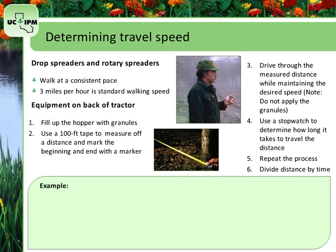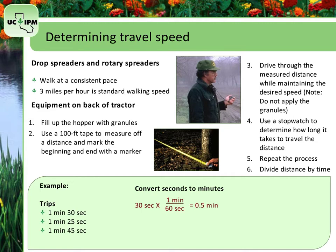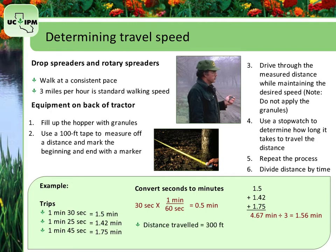Here is an example. Say your trips were 1 minute 30 seconds, 1 minute 25 seconds, and 1 minute 45 seconds. First you would have to convert these all to minutes. So for your first trip, 30 seconds multiplied by 1 minute per 60 seconds equals 0.5 minutes. So 1 minute 30 seconds equals 1.5 minutes, the next equals 1.42 minutes, and the last equals 1.75 minutes. Adding the 3 up and dividing by 3 gives you an average of 1.56 minutes for your travel time. The measured distance traveled was 300 feet. Divide that by the time it took you — 300 divided by 1.56 minutes — and you get 192.3 feet per minute for your travel speed.